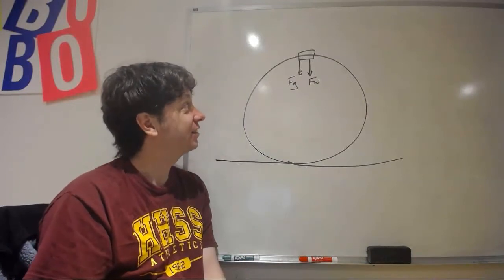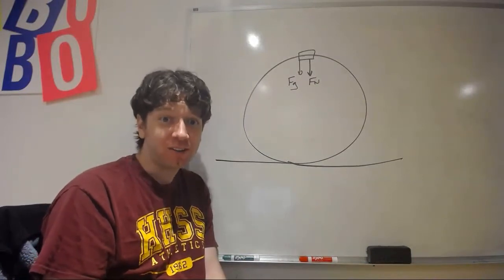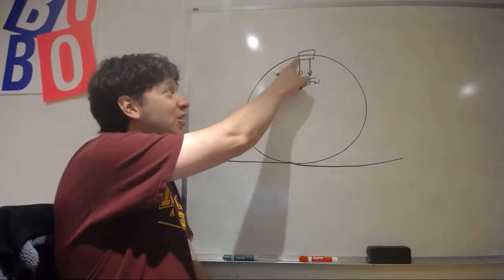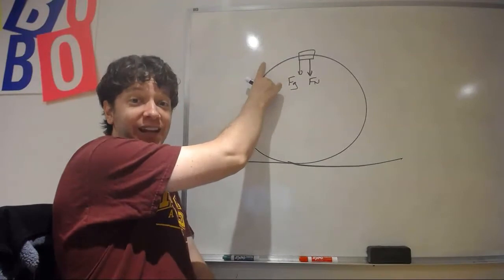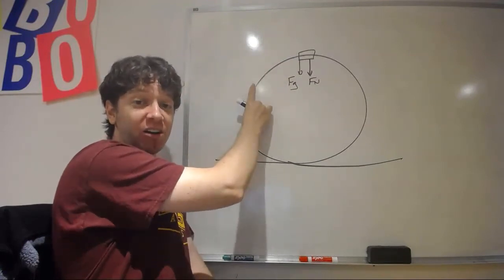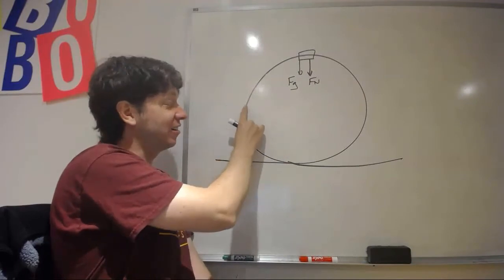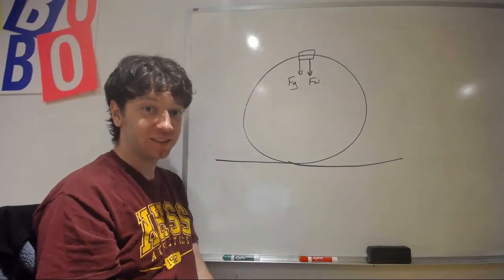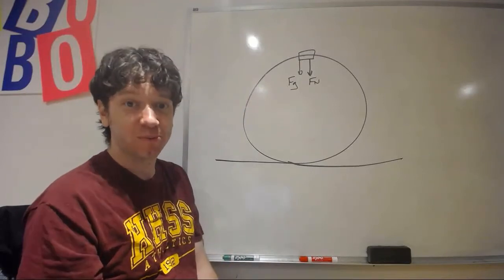And so, technically, you are always falling, but you're falling around the curvature. Now, if you look at this situation, you are going to fall. But, if your speed is high enough, as you fall, you will move forward enough that you're still on the track. And the track is always going to push you inwards in the direction of centripetal acceleration.